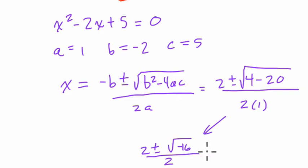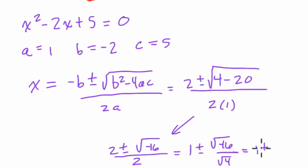This is going to give us an imaginary number. You can simplify this by dividing both numerators by 2 if you want. You get 1 plus or minus the square root of negative 16 divided by the square root of 4. That just equals 1 plus or minus the square root of negative 4.